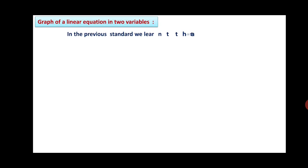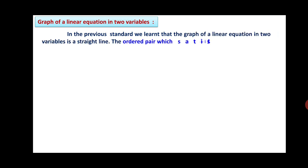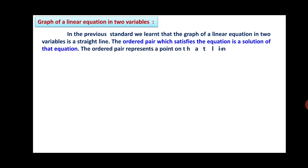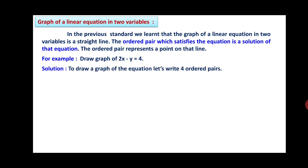Friends, in the previous standards we learnt that the graph of a linear equation in two variables is a straight line. The ordered pair which satisfies the equation is a solution of that equation, and the ordered pair represents a point on that line. For example, if you want to draw a graph of 2x minus y equals 4, then you have to write 4 ordered pairs. Here, 2x minus y equals 4, therefore you can write y equals 2x minus 4.